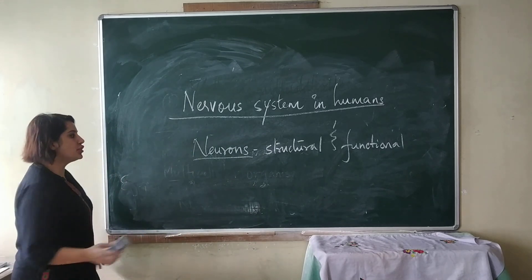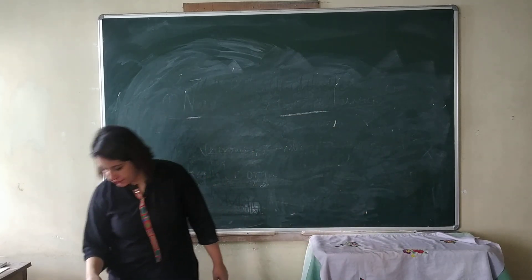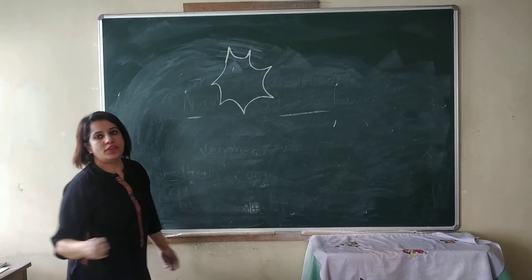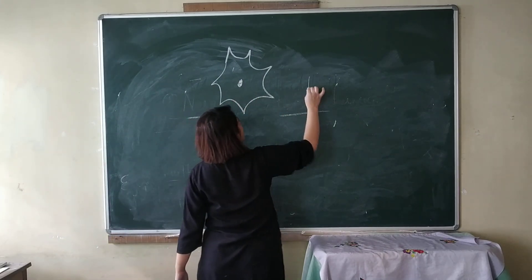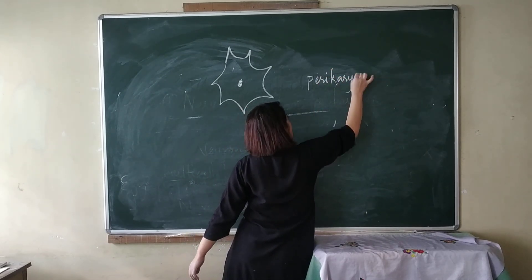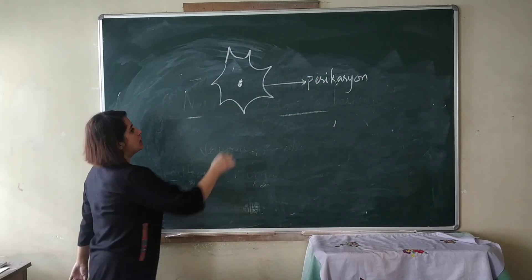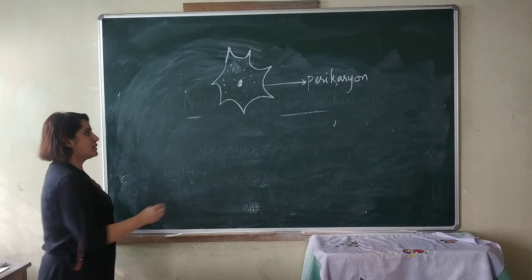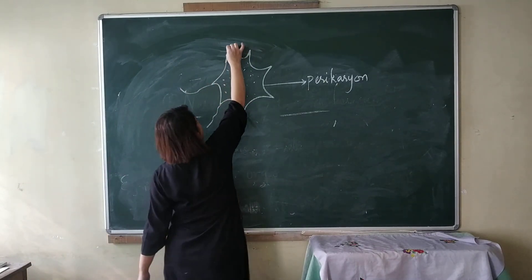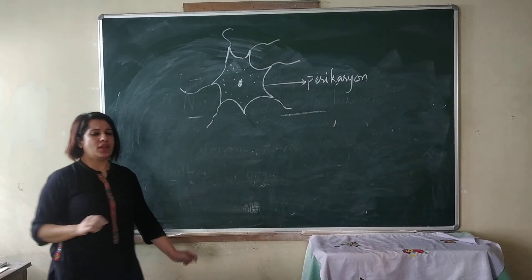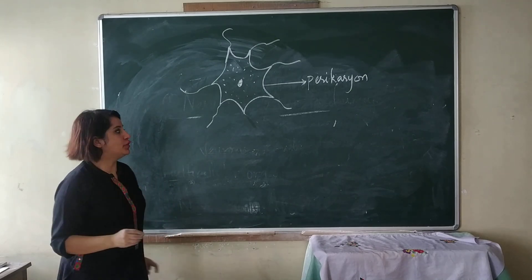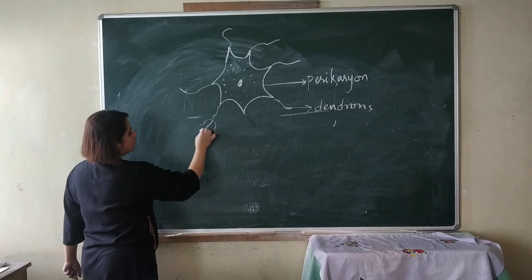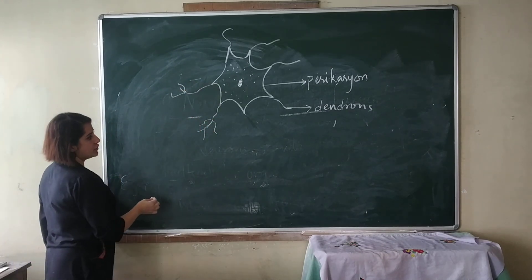Let's discuss about the structure of a neuron. The neuron consists of a cell body which is called the pericarion. The pericarion consists of cytoplasm and a centrally located nucleus. Arising from this pericarion are short thread-like protoplasmic projections called dendrons. The dendrons are branched into smaller thread-like protoplasmic projections called dendrites.